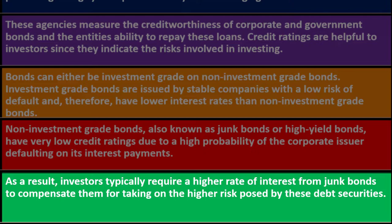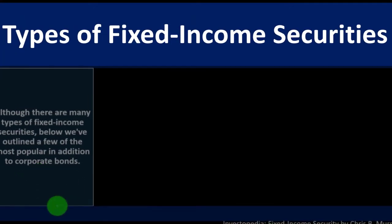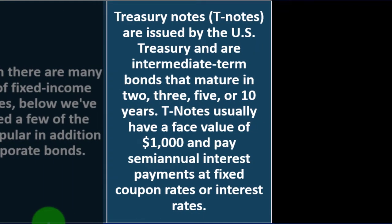Junk bonds have very low credit ratings due to the high probability of the corporate issuer defaulting on its interest and principal payments. As a result, investors typically require a higher rate of return from junk bonds to compensate for taking on the higher risk. Although there are many types of fixed income securities, below are a few of the most popular in addition to corporate bonds.